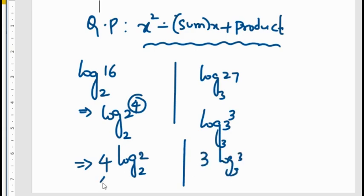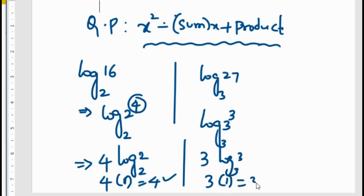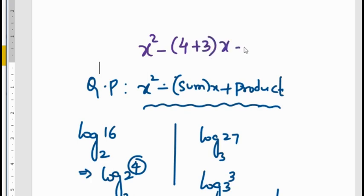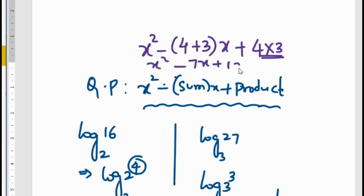Since log A base A equals 1, we get 4 times 1 equals 4, and 3 times 1 equals 3. So the two zeros are 4 and 3. Applying these in the quadratic formula: x squared minus (sum of zeros) x plus (product of zeros). Sum is 4 plus 3 equals 7, and product is 4 into 3 equals 12. So the quadratic polynomial is x squared minus 7x plus 12.